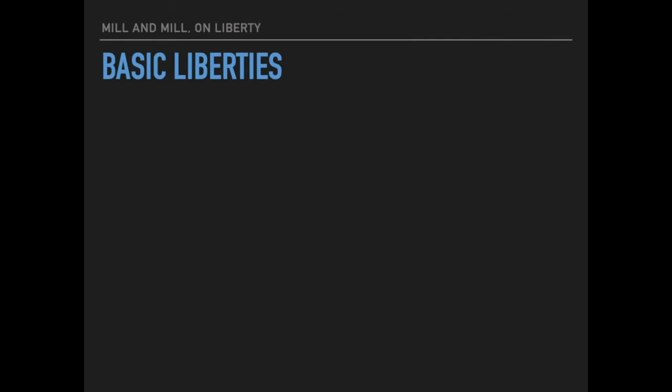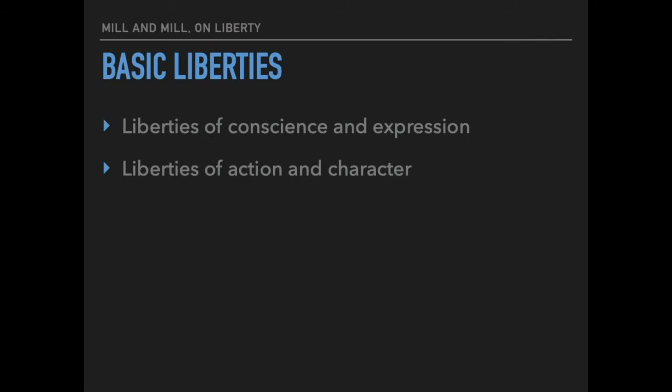It's important to note that in this essay, the Mills are not talking about just any kind of rights or liberties — they have a very specific set of basic liberties in mind. The first are liberties of conscience and expression: the liberty to believe what one will and to express one's belief in speech or writing. The second are liberties of action and character: the liberty to form one's own tastes and desires and to pursue them. And then the liberties of association: liberties of who one interacts with and what kind of groups you form. They devote a chapter to each of these basic liberties.